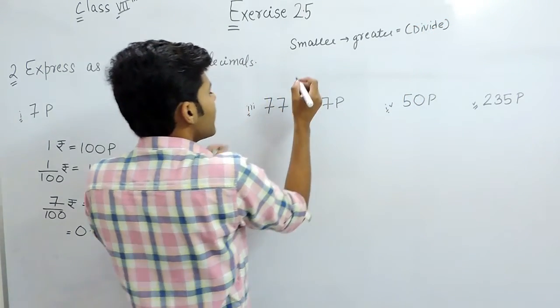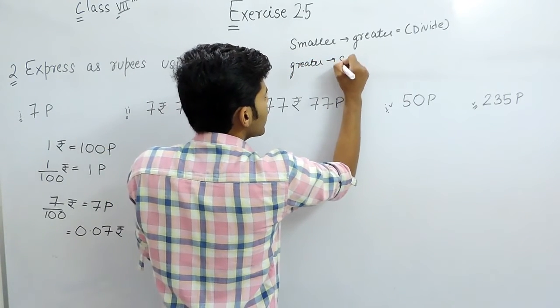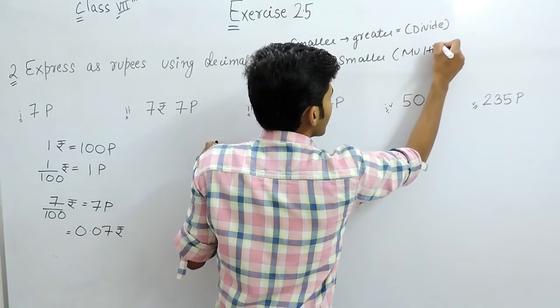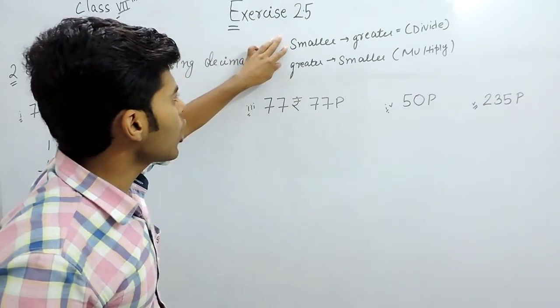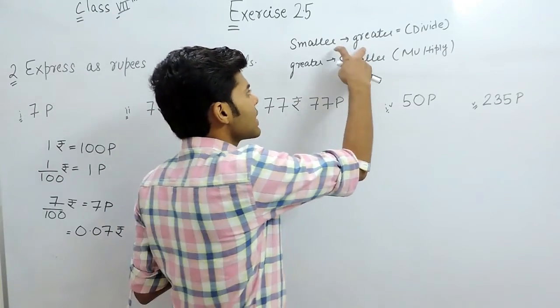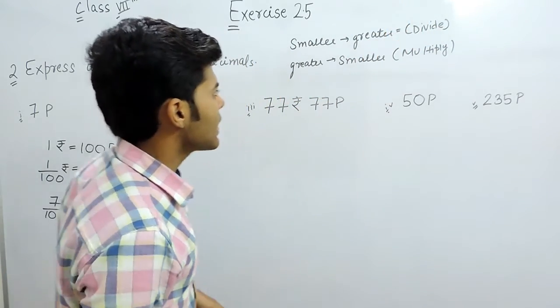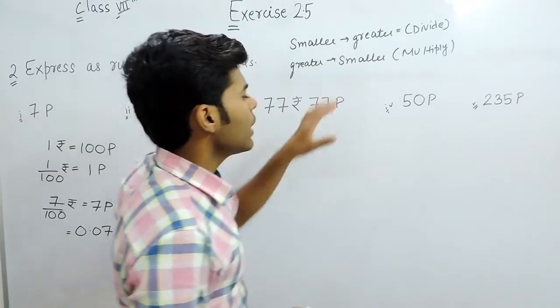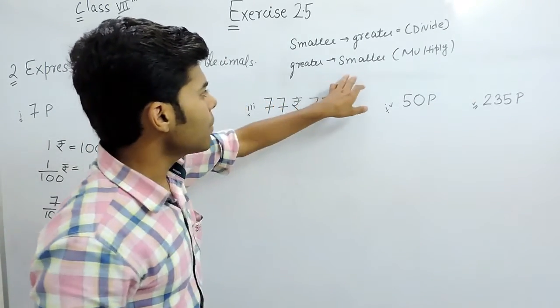And when we have to convert greater quantity into smaller quantity, we have to multiply. Why we have to do this? Because if we are having a smaller quantity and we are converting it into greater quantity, then the greater quantity will be less than the smaller quantity and in division, the term that will come will be lesser. When we have to convert greater quantity into smaller quantity, then we will multiply because a greater quantity when converted into smaller quantity will become a bit greater.